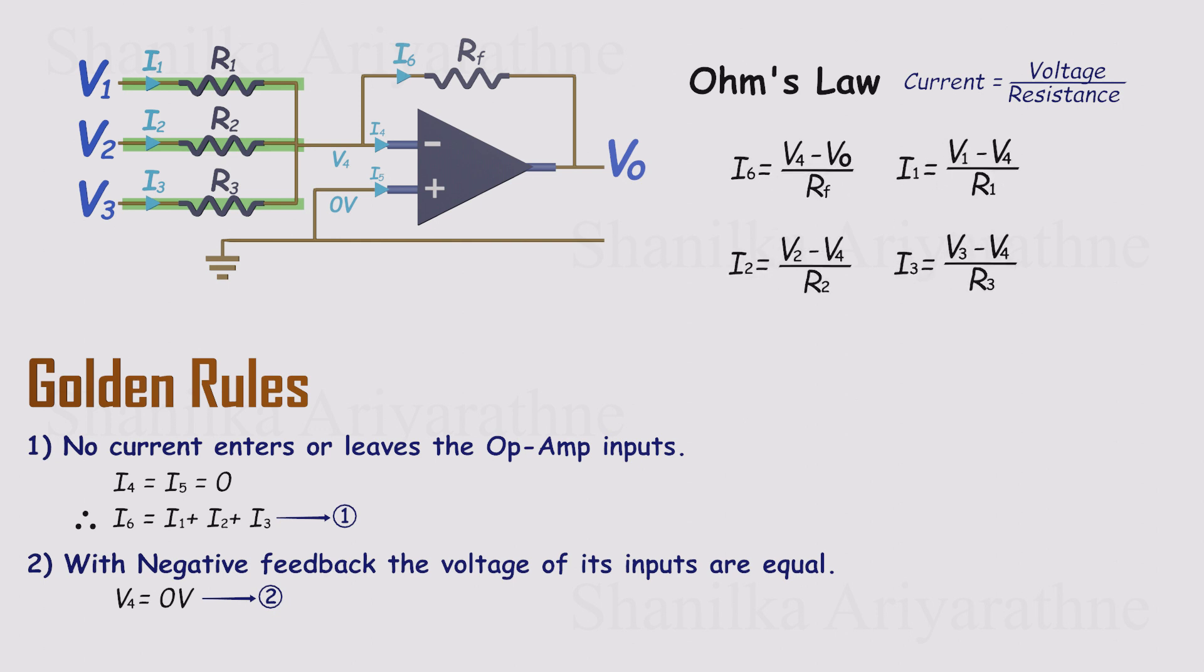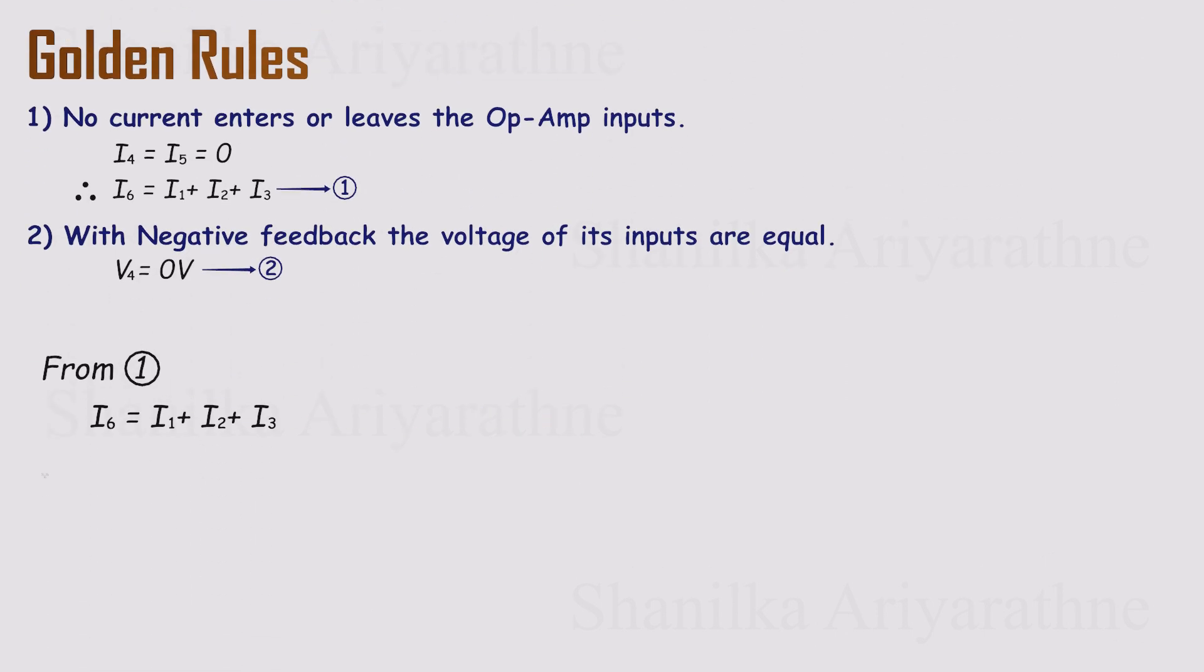Using Ohm's law, we can express all the currents in terms of voltages and resistances. Now, substitute those into our equation and we get our third relationship. It looks a little messy at first, but don't worry, golden rule number two saves the day.